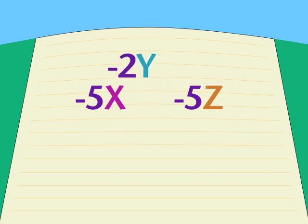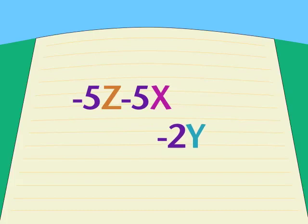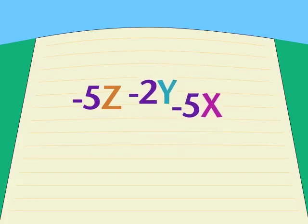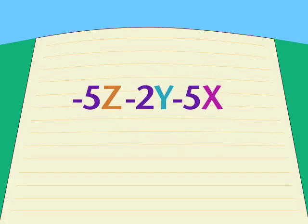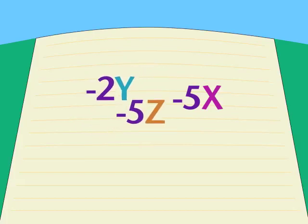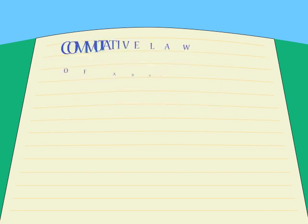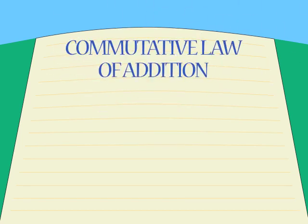Or perhaps you got something a little different — the same terms but in a different order. Good news! You're still right, no matter which way they're arranged, just as long as each term is correct. Remember the commutative law from arithmetic? It says that in some cases the order or sequence doesn't matter.